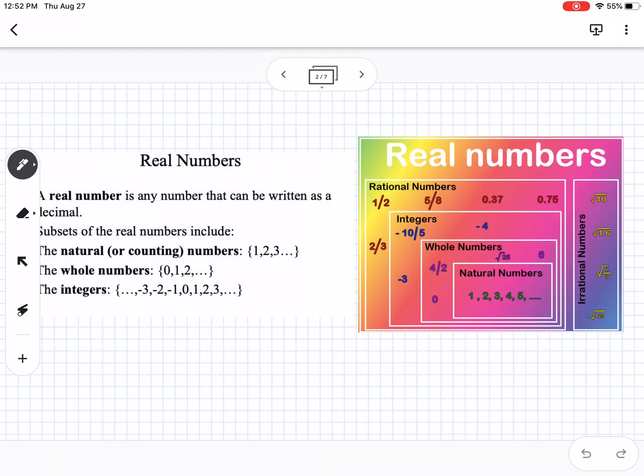The first thing is real numbers. I included this graphic and there are some things in the notes as well. A real number is basically anything that's not imaginary. We talked about in Algebra 2 about complex numbers, things that have i in them. Those are imaginary numbers, not real. Everything else falls under the category of real numbers.